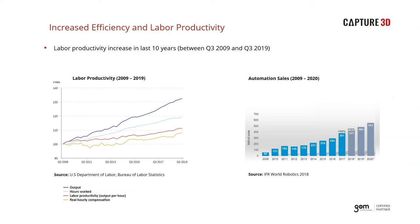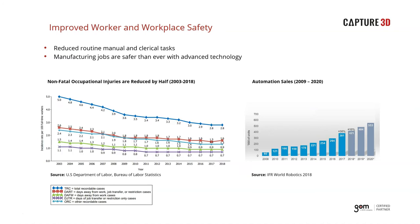Automating the inspection process ties into increased efficiency and labor productivity by freeing up team members. The graphs shown here illustrate the increase in labor productivity over the past 10 years alongside the increase in automation sales — there is a clear correlation between the two. Automation also improves worker and workplace safety. By transferring the worker from active participation to a supervisory role, the work is made safer and they're freed up to be more productive. Reduction of workplace occupational injuries also shares a correlation with the implementation of automation.